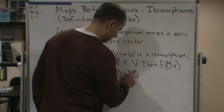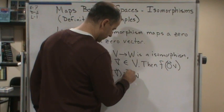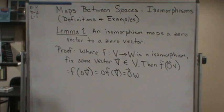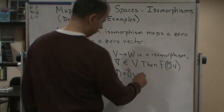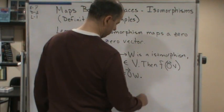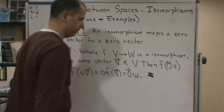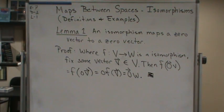Oh actually, we can write this this way: zero vector W. And that's it. Okay, all right, thank you.